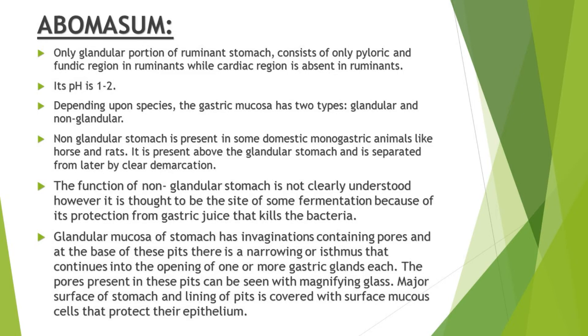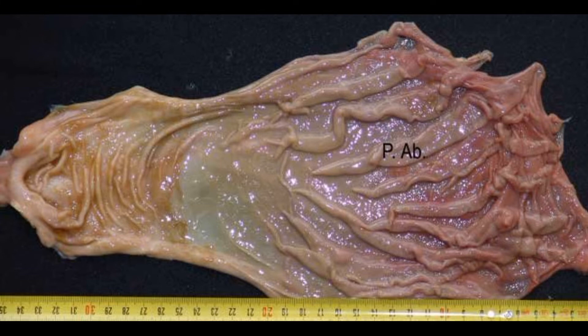The last compartment of the stomach is abomasum, and abomasum is the only glandular portion of the ruminant stomach. The rumen, reticulum and omasum don't secrete any secretions, while abomasum is the glandular portion and it secretes particular types of secretions. In ruminants, abomasum consists of only pyloric and fundic regions — the cardiac region is absent in ruminants, while the cardiac region is present in non-ruminant stomach.